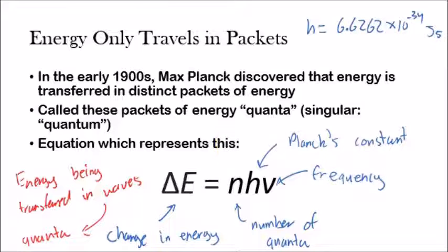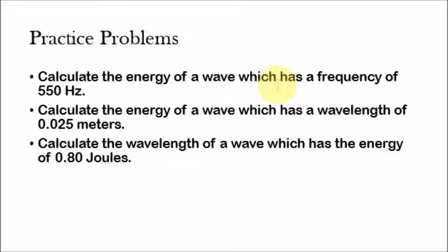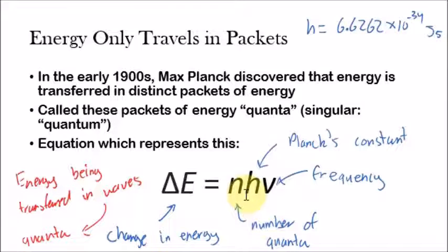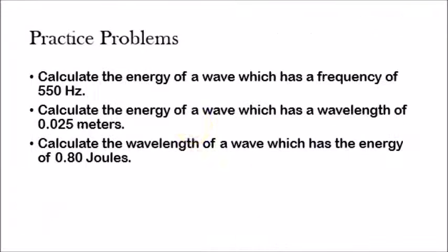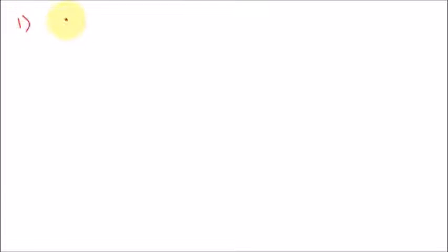Now these problems are going to make sense. Let's say we want to calculate the energy of a wave which has a frequency of 550 Hz. These problems are not giving us the number of quanta, so let's assume that the number of quanta is just 1. So we're just saying E equals H times nu. So: calculate the energy of a wave which has a frequency of 550 Hz. All we do is use the equation. Delta E — change in energy — equals N times H times nu.